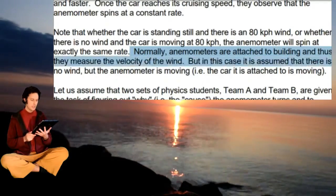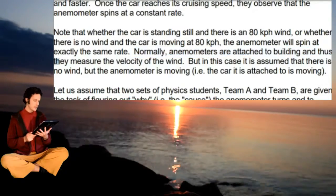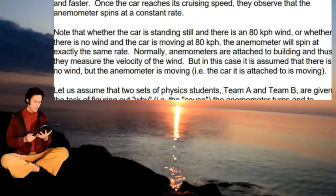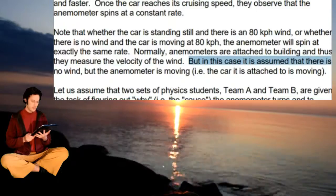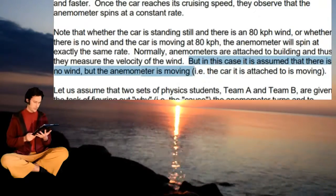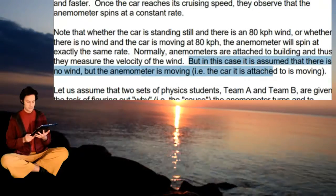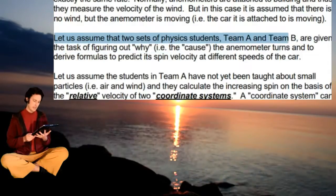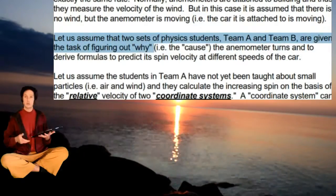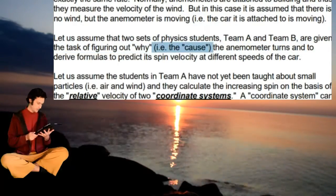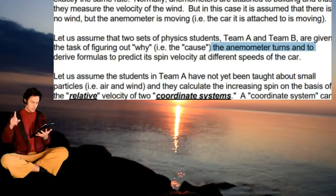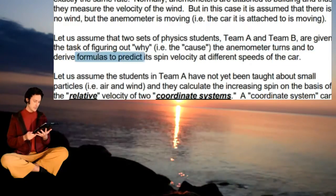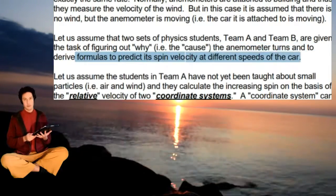Normally, anemometers are attached to buildings and thus measure the velocity of the wind. But in this case, it is assumed that there is no wind but the anemometer is moving — that is, the car it is attached to is moving. Two sets of physics students, Team A and Team B, are given the task of figuring out why — that is, the cause — the anemometer turns, and to derive a formula to predict its spin velocity at different speeds of the car.